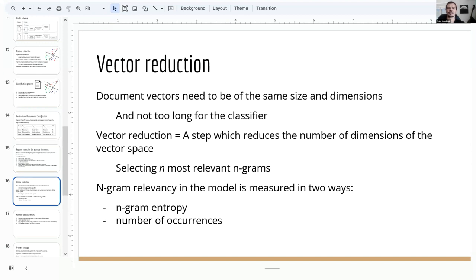As each document is assigned with the feature vector and positioned into the n-dimensional space by values in that vector, vector needs to be of the same size and have the same dimensions. Vector can be too long for the classifier as they include all of the n-grams gathered during the training phase. Vector reduction is performed as a step which reduces the number of dimensions of the vector space. It is based on selecting the most relevant n-grams to get the best classification results. N-gram relevance is measured in two ways, the n-gram entropy and number of appearances. Based on these measures, best rated n-grams were included into the reduced feature vector. The vector size was tested for 1000 and 2000 n-grams, and document vectors created in this way are passed to the support vector machine trainer as the input for training, and are used later for the document classification based on the generated classification rules.